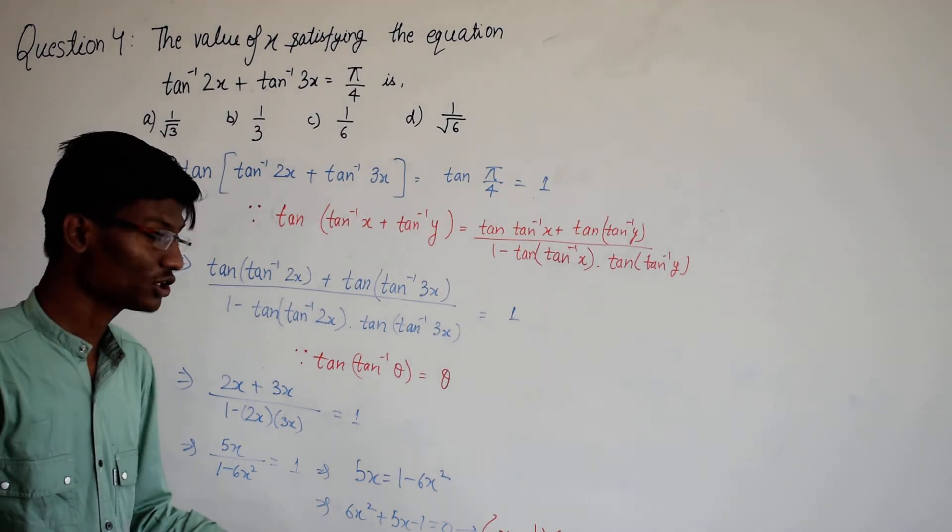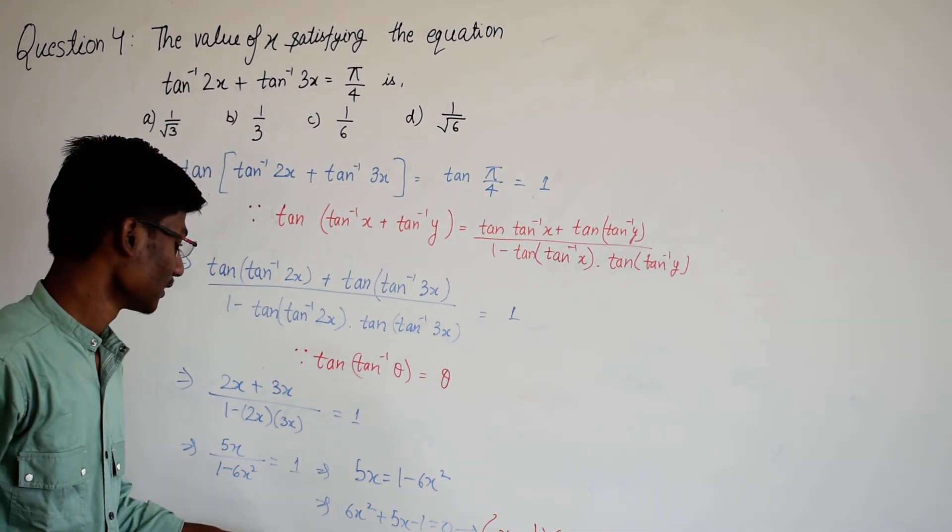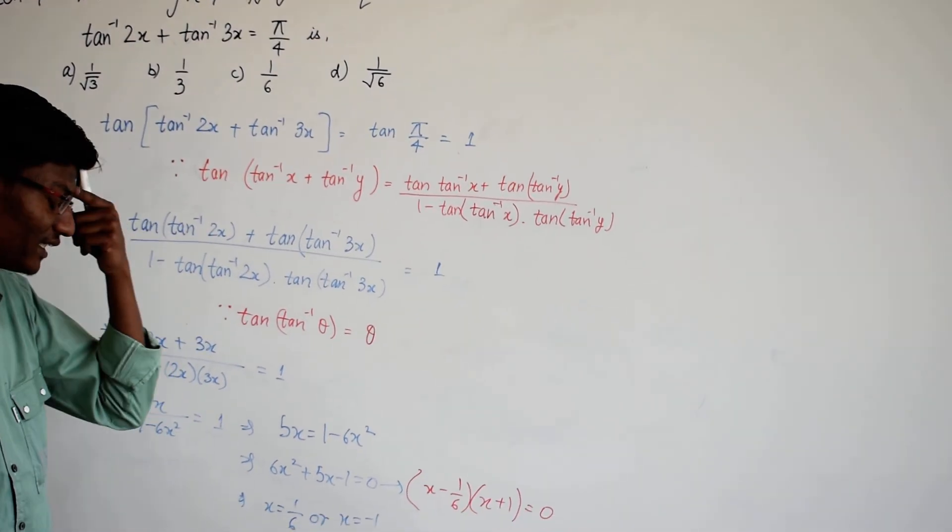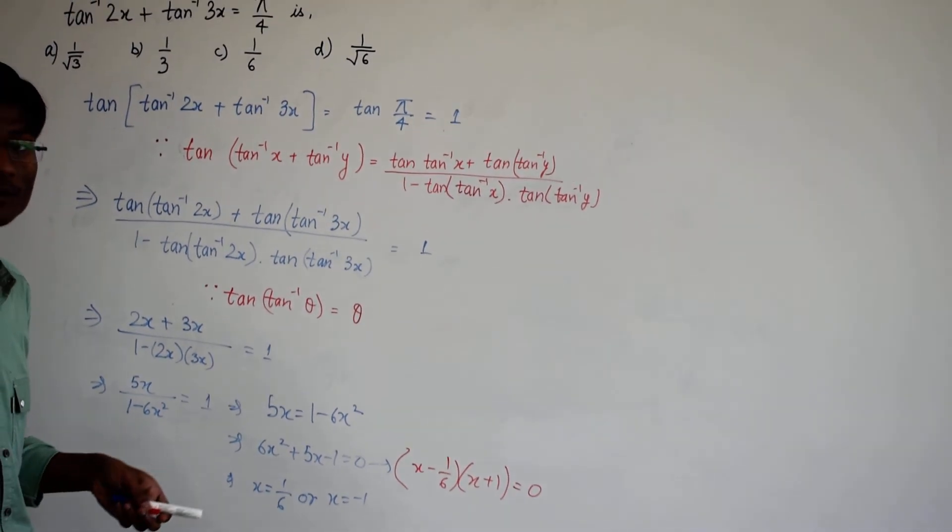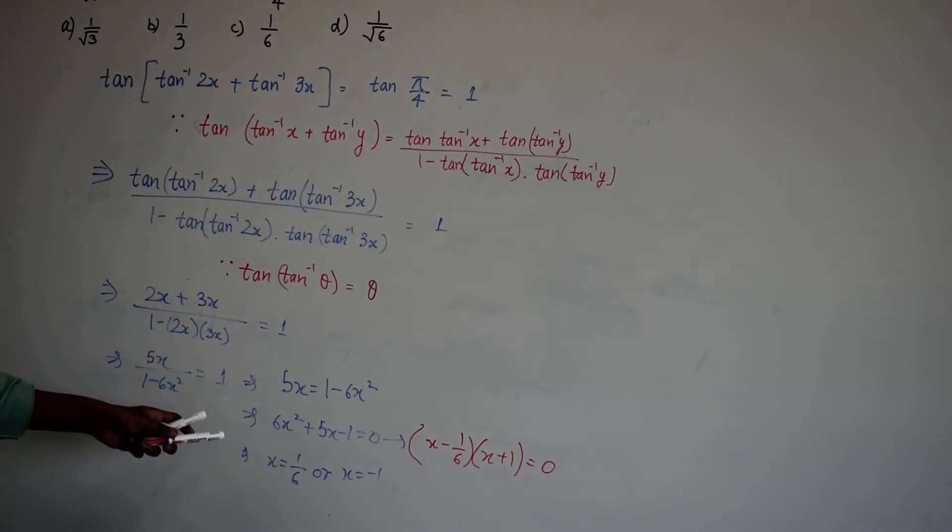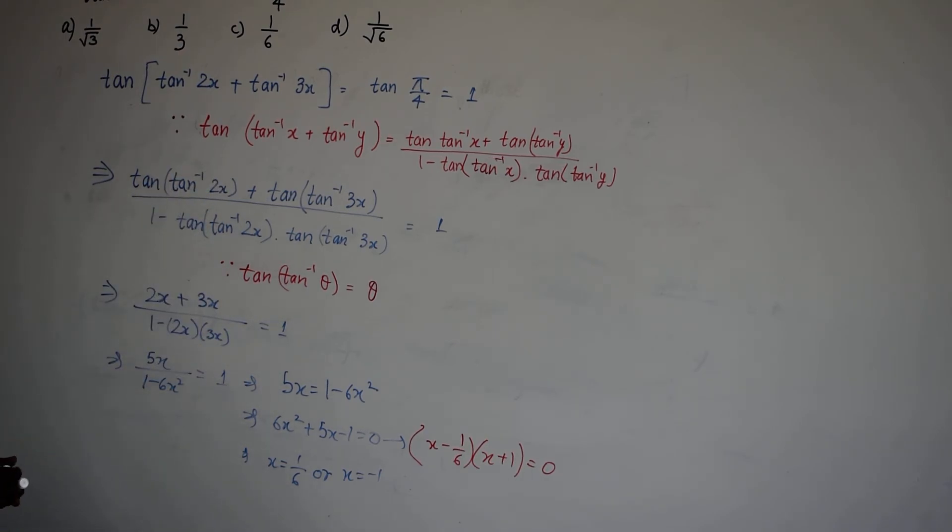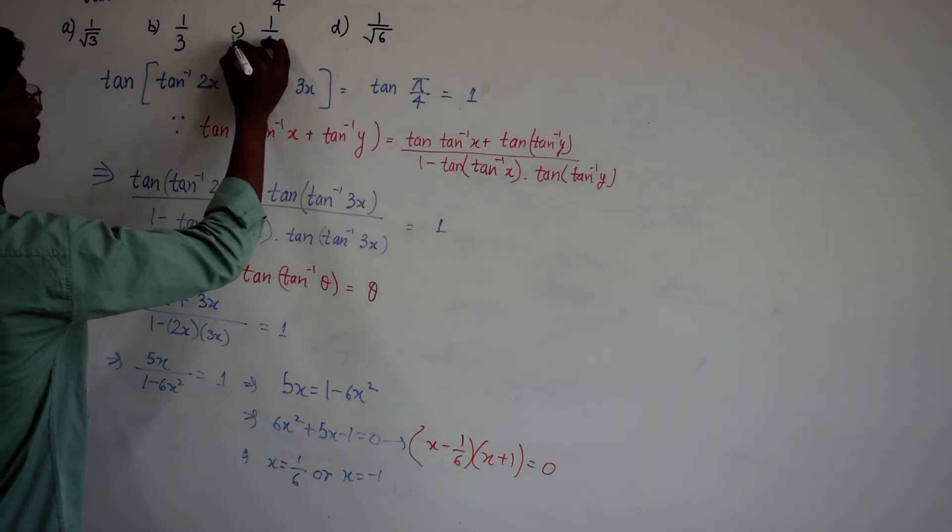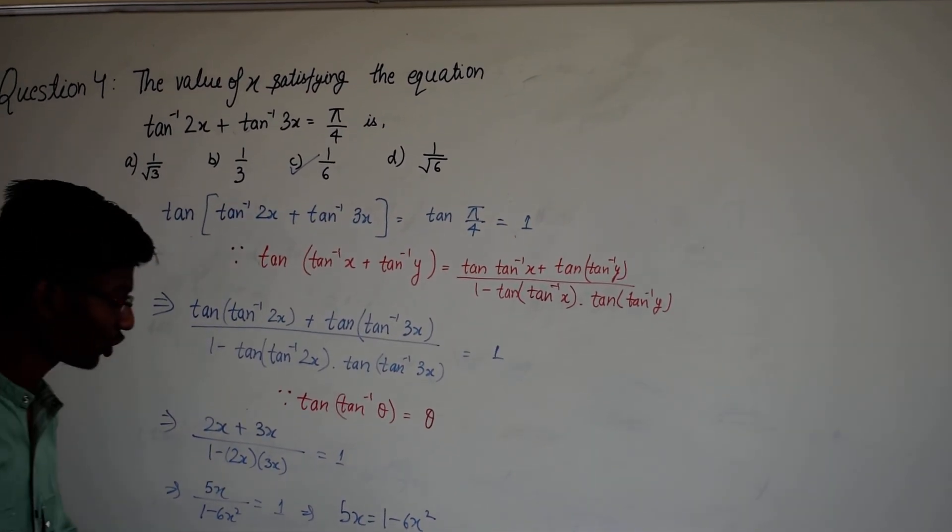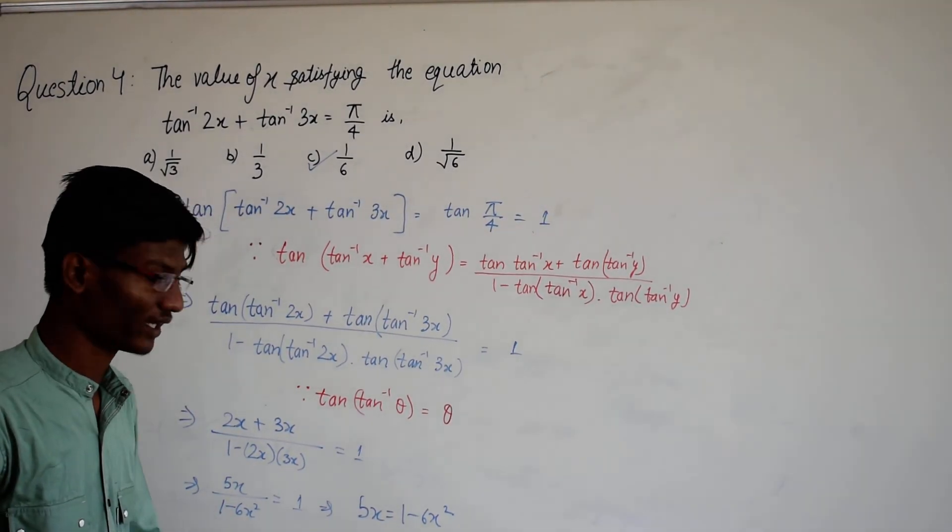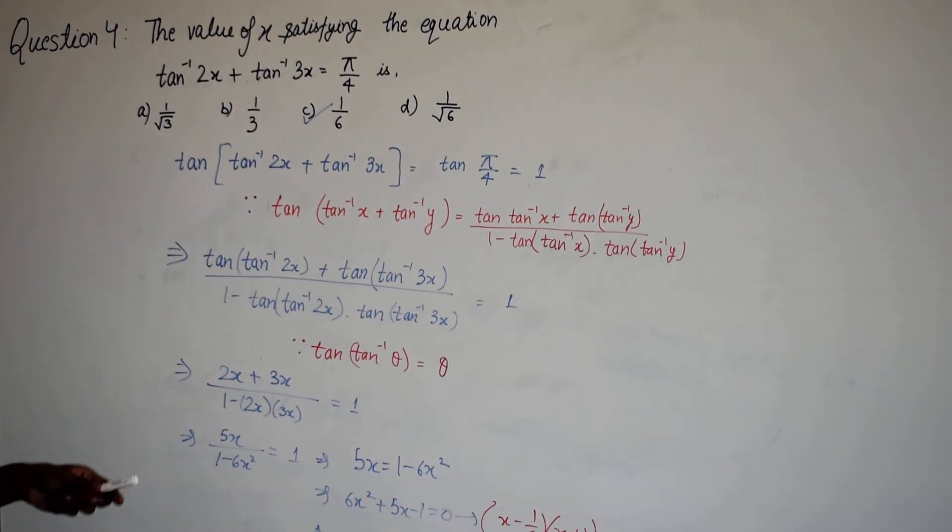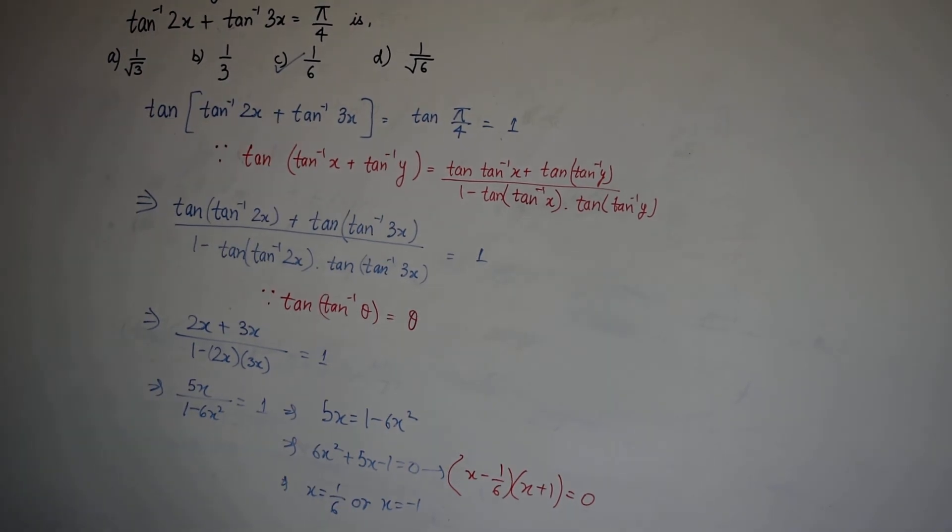Now this is not our final answer. In this type of question, you usually evaluate two values and one of them does not satisfy the equation. But in this case only one option is matching so option C will be the answer. But always remember to always cross check the value of x that are evaluated in the initial equation. So option C is the correct answer.